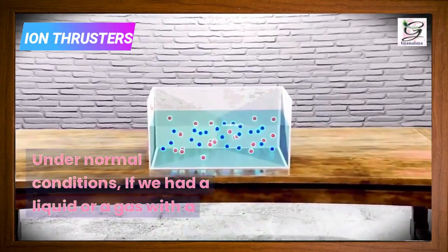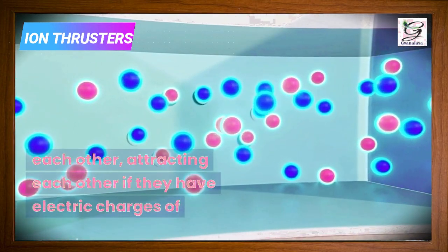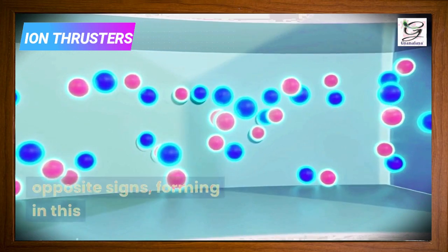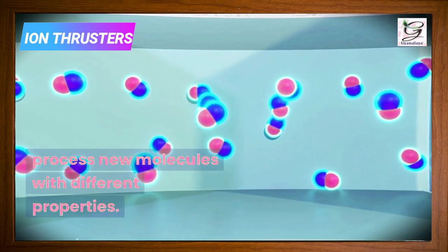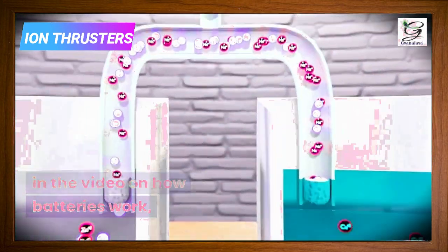Under normal conditions, if we had a liquid or a gas with a mixture of ions with different charges, they would interact with each other, attracting each other if they have electric charges of opposite signs, forming in this process new molecules with different properties, similar to what we saw in the video on how batteries work.